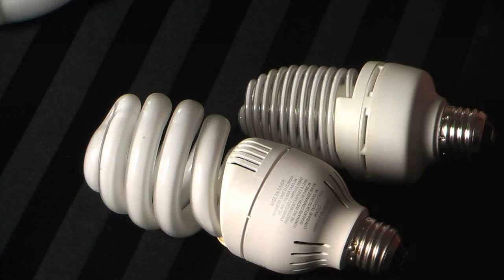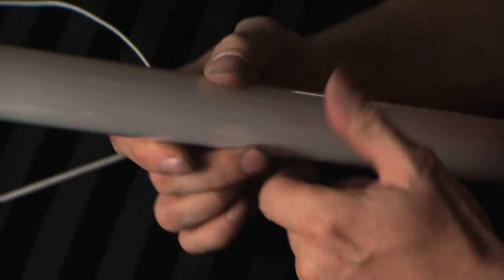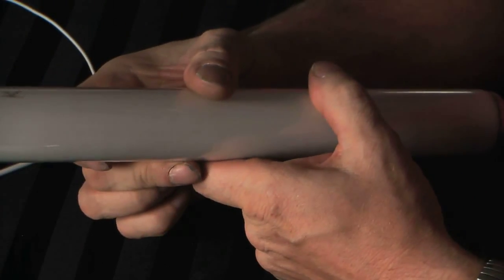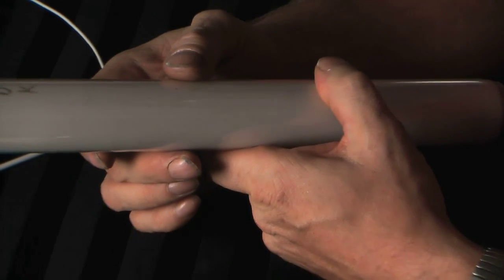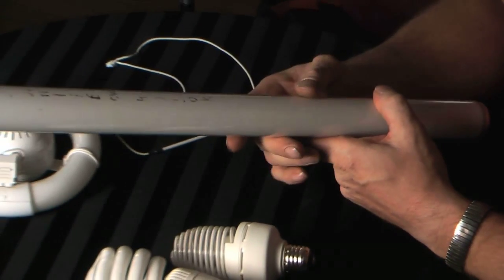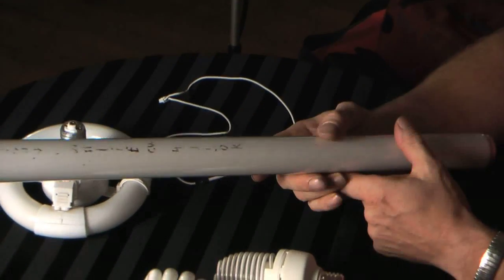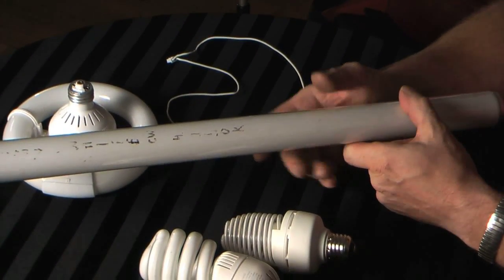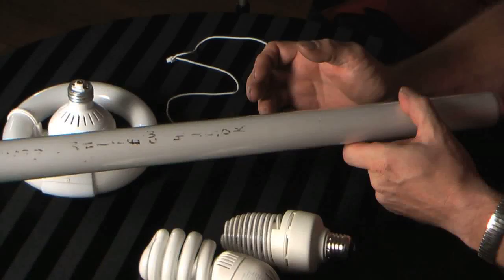And in fact this lamp I have in my hand is one of the first sizes ever made, 20 watt. In 1938 there was only a 15 watt 18 inch, a 20 watt 24 inch, which is this lamp, and a 30 watt 36 inch.